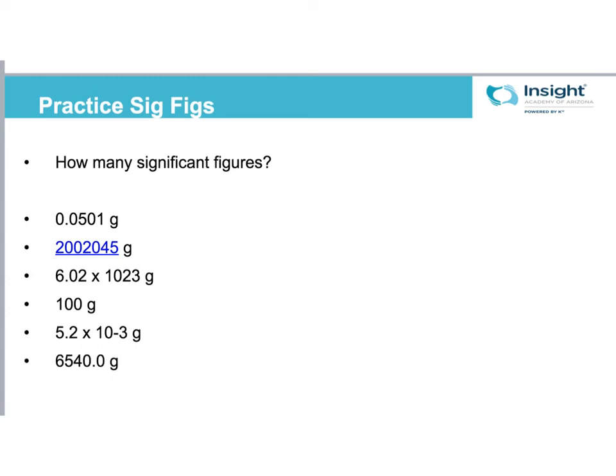All right. So, first one, 0.0501. I know five and one are significant because they're non-zeros. The first two zeros are zeros to the left. Those never count. The middle zero is sandwiched in between, so that does count. So there's three sig figs here. Five, zero, and one. For the next one, two million, 2002045. I think that's what that number is. So, I've got four non-zeros that count, and all the zeros that are present in this number are sandwiched in between non-zero numbers, so actually every single digit in here is significant. So there are one, two, three, four, five, six, seven sig figs in that number.